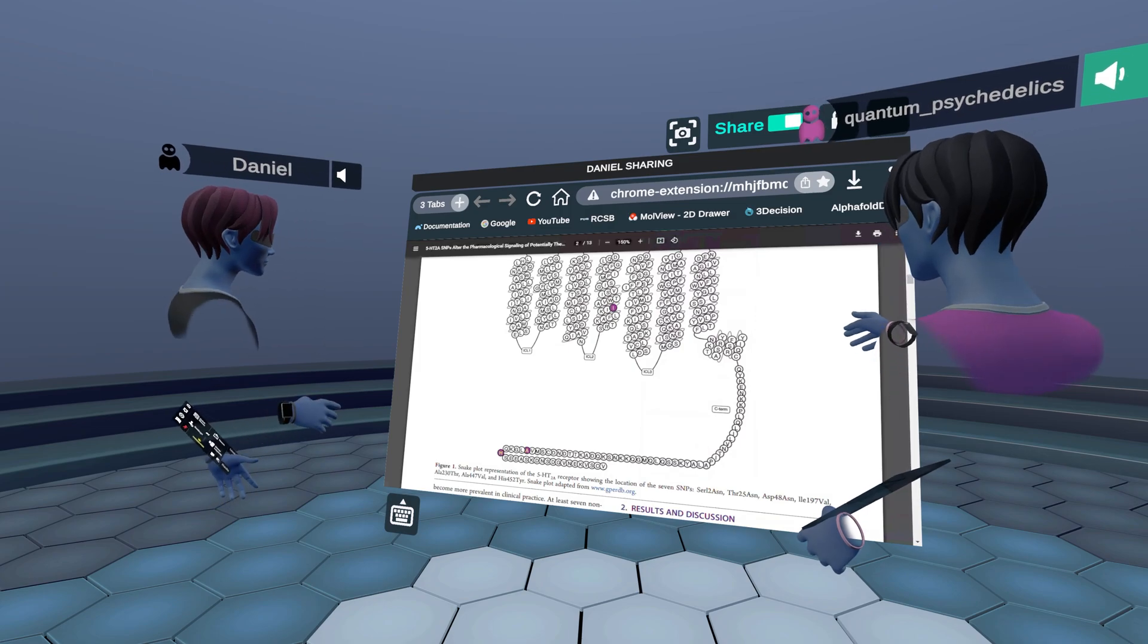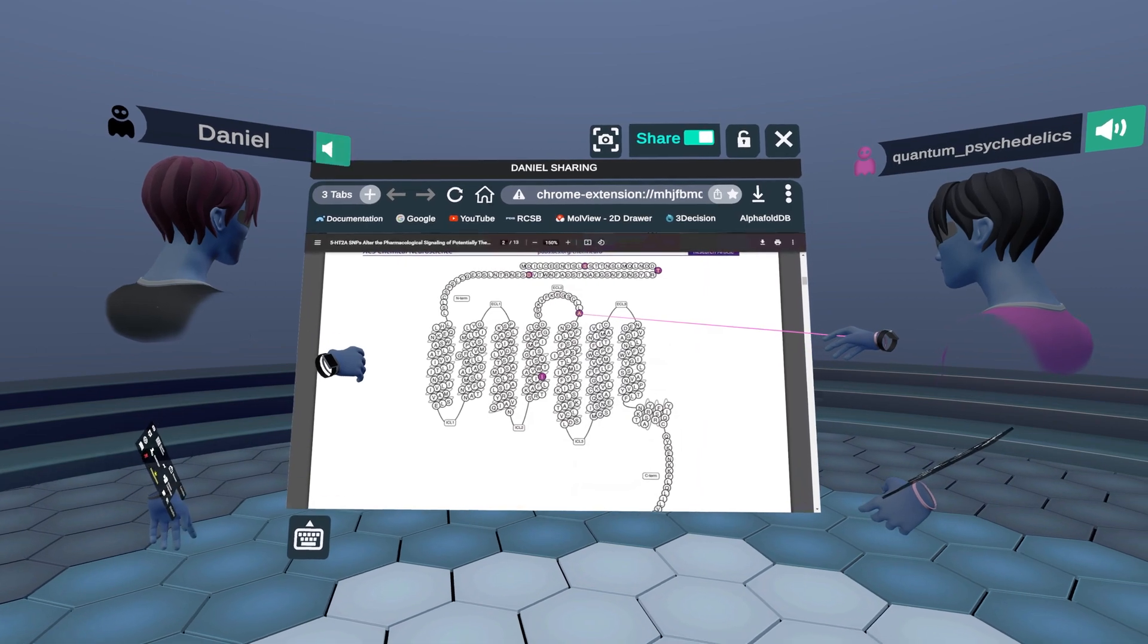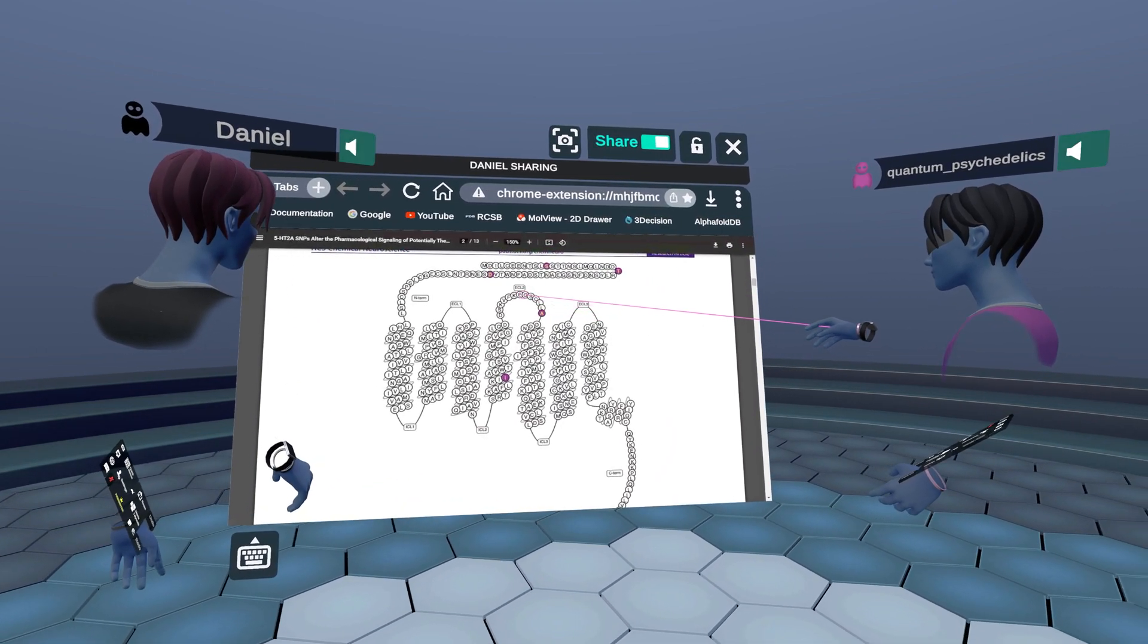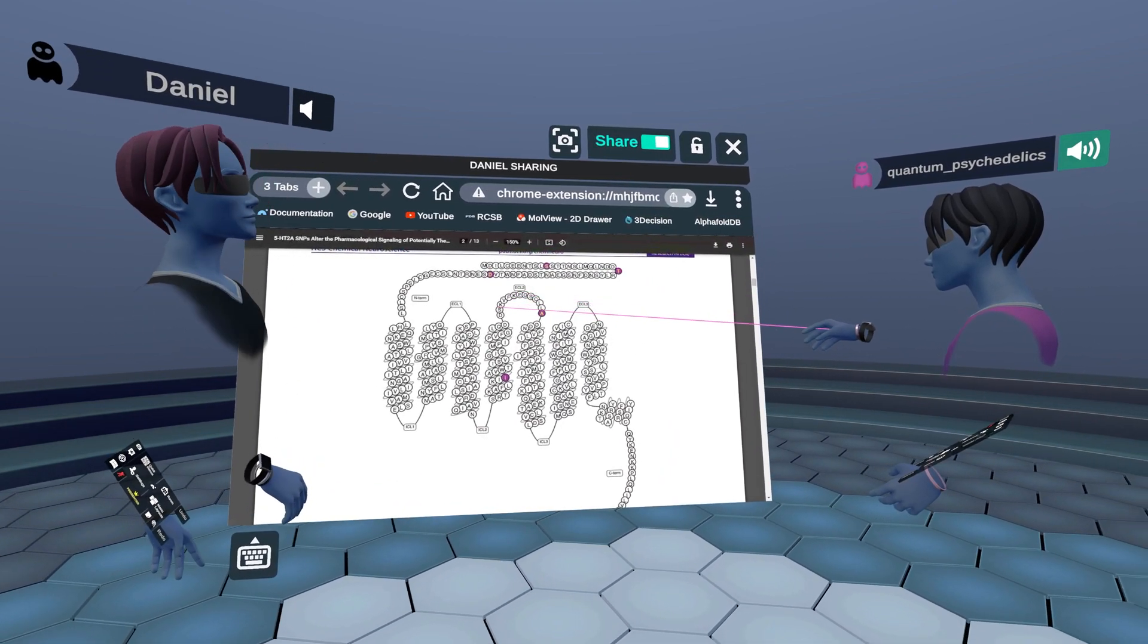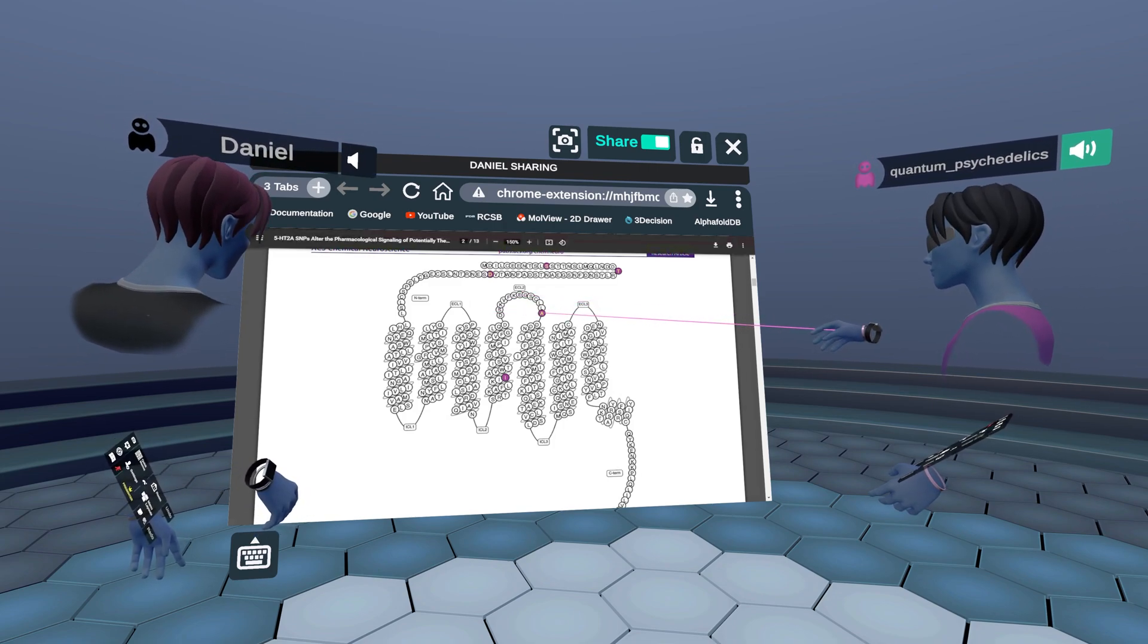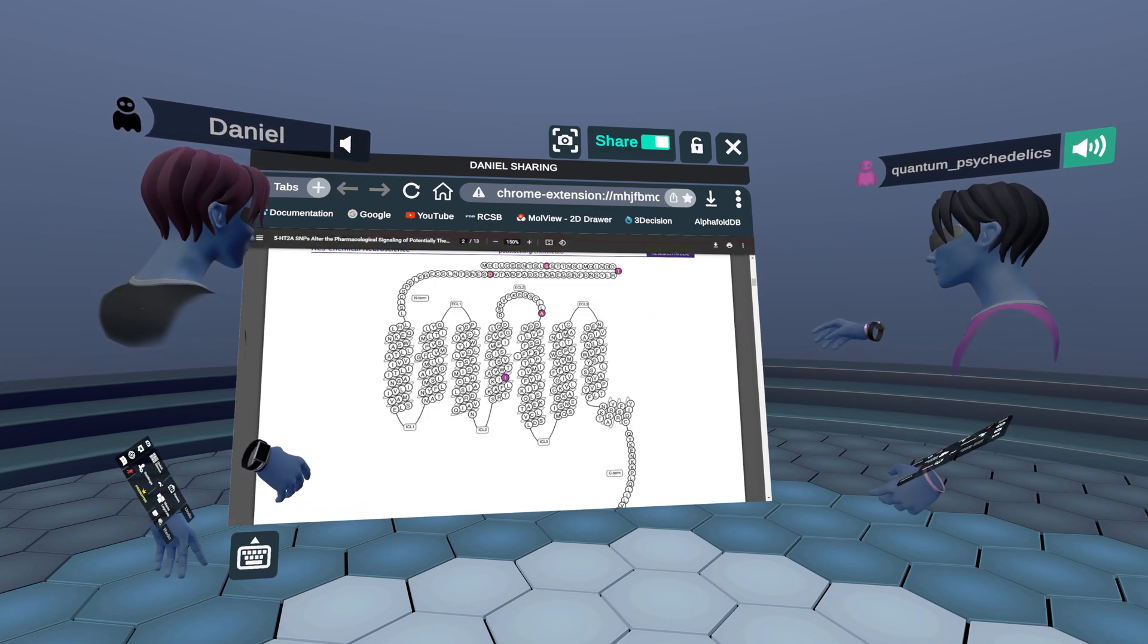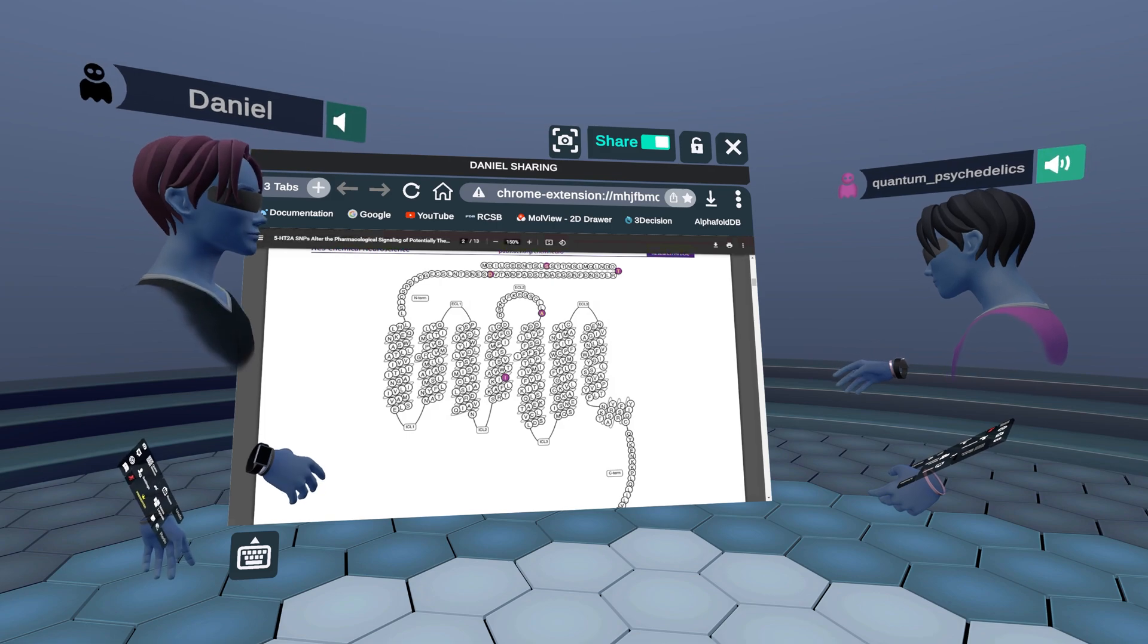But then, if you go to the top a little bit, Daniel, near extracellular loop number two, this residue mutation here, which is actually part of the lid mechanism that Brian Roth's research group discovered, it actually does not affect psychedelics too much, which is interesting because it's within the orthosteric binding site.